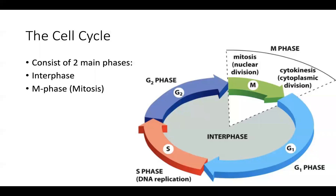Interphase is the preparation period. The cell spends most of its time in interphase preparing for cell division. During M phase, a process known as mitosis takes place — this is where we see the physical manipulations of chromosomes in preparation for cytokinesis, where the cytoplasm actually splits off into two new cells. G1, gap phase one, is a period of normal growth and metabolism where the cell synthesizes enzymes preparing to enter S phase.